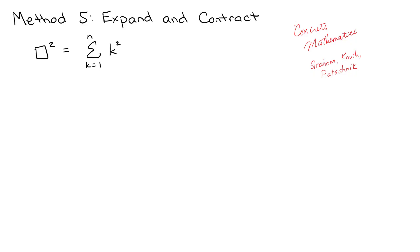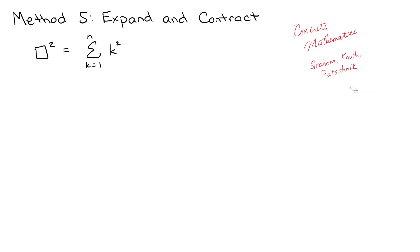I'm continuing along my adventure of going through the Concrete Mathematics book by Graham, Knuth, and Patashnik, and I'm on section 2.5 right now. Basically the point is we are trying to convert some summation into a closed form. We've looked at many methods so far: the look-it-up method, the guess-and-check, perturbing the sum, the repertoire method, and turning it into an integral. This is the last one I'm going to work on for a while, which is expand and contract.